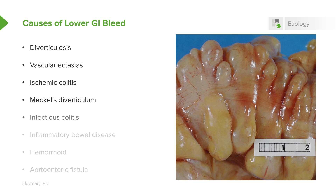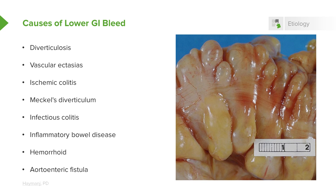Additional causes of lower GI bleed include Meckel's diverticulum, infectious colitis where different bacteria cause irritation and bleeding in the GI tract, inflammatory bowel disease such as ulcerative colitis and Crohn's disease, and something simple like hemorrhoids. The most serious cause is an aortoenteric fistula, where the aorta and the bowel become connected — that can cause a massive amount of bleeding. It's rare but very worrisome.